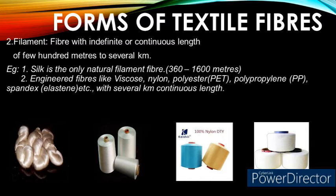Man-made filament yarns produced using chemical spinning machines can be many kilometers long in length. The filaments consist of very long thin cylinders of extruded fibrous material, either in a single strand called monofilament, or grouped in multiple strands called multifilament. The most important difference between a staple fiber and a filament is its length.